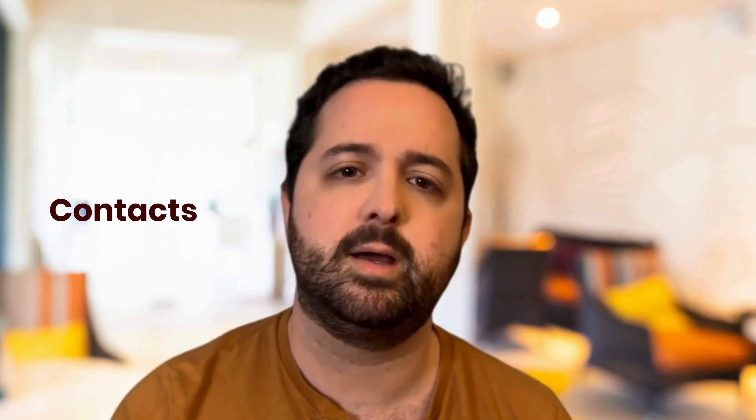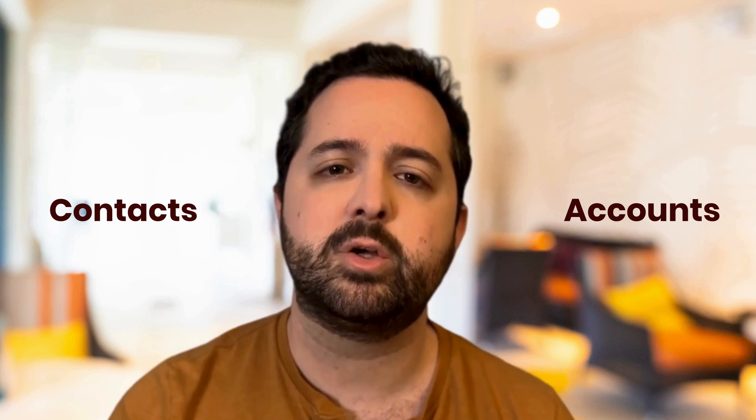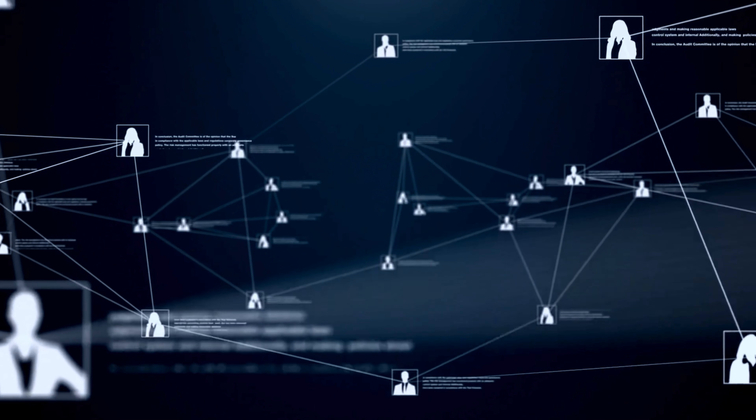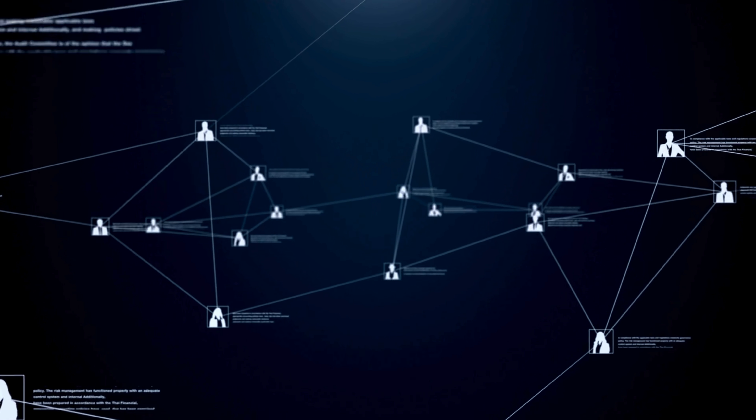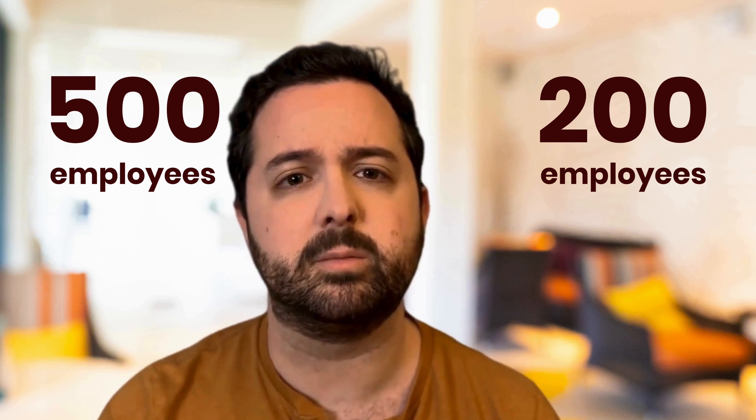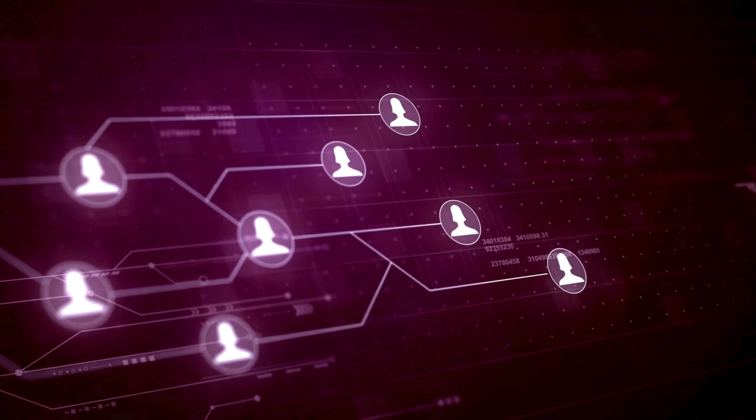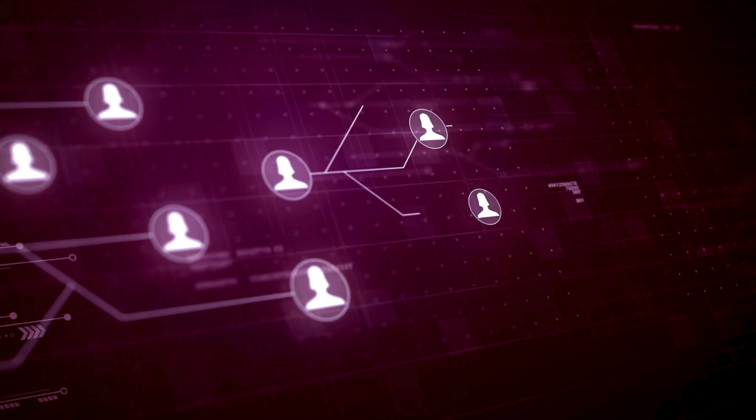A bit of a simplification: without Apollo we have two core data models, contacts and accounts. We actually try to synchronize as much information as possible from the account onto the contact. For example, if a contact's account goes from having about 200 employees to about 500 employees, we'll synchronize that information right back to the contact. This allows us to provide our end users with speedy querying — for example, it's only querying on a single object.